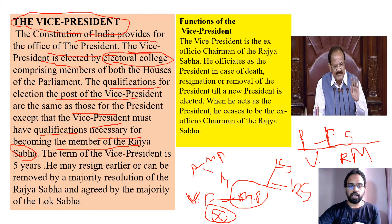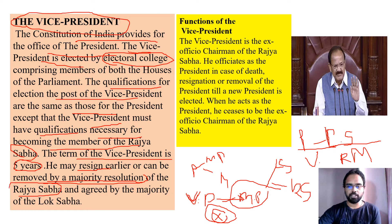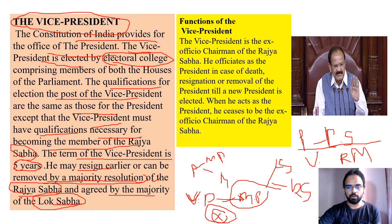Like the president, the term of the Vice President is five years, and he can also resign or be removed by a majority resolution. In case of resignation, he submits it to the president. If he has done unconstitutional things, he can be removed by a majority resolution of Rajya Sabha, and such removal must also be agreed upon by a majority of Lok Sabha.